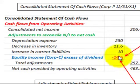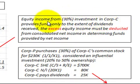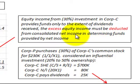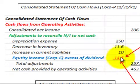So the $14,500 is subtracted out on our consolidated statement of cash flows. To recap: the equity income from the 30 percent investment in corporation C provides funds only to the extent of the dividends received. The excess equity income must be deducted from consolidated net income in determining the funds provided by net income. That's what we've done here — we made our calculations and subtracted out this non-cash income of $14,500.